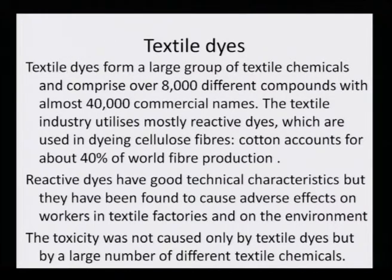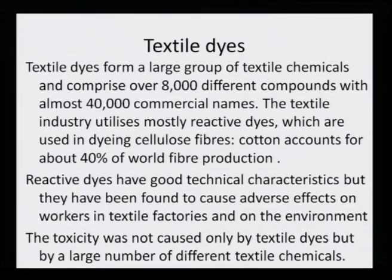Textile dyes form a large group of textile chemicals and comprise over 8,000 different compounds with almost 40,000 commercial names. The textile industry utilizes mostly reactive dyes, which are used in dyeing cellulose fibers such as cotton, and that accounts for about 40 percent of the world fiber production. That is the kind of volume of chemical dyes being used, particularly the reactive dyes.